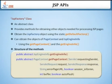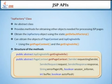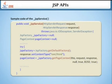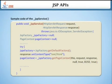A sample JSP code shows the _jspService method, where JspFactory is initialized to null and PageContext is defined as null. Within a try block, JspFactory is assigned using the static method JspFactory.getDefaultFactory.